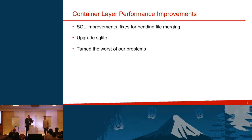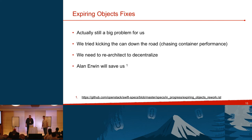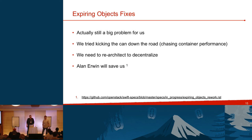We've put in a few fixes to Swift to improve DB throughput and upgraded SQLite, but most of these are performance fixes, not tackling the architecture of the problem. We've been kicking the can down the road, chasing performance. We really need to re-architect the whole thing to decentralize it. There's a spec by Alan Irwin right now, and we're hoping he'll save us on this particular problem.